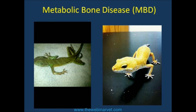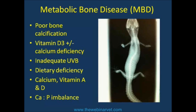Subclinical metabolic bone disease is where calcium reserves are already starting to be absorbed from the skeleton. The leopard gecko on the right of the screen looks quite normal and is moving around normally, but it presented with anorexia for several weeks and was fairly low in calcium due to poor diet. Essentially, metabolic bone disease is poor bone calcification or absorption of calcium reserves from the skeletal system.